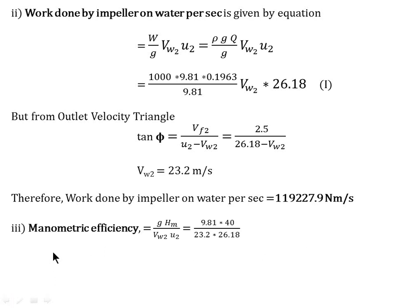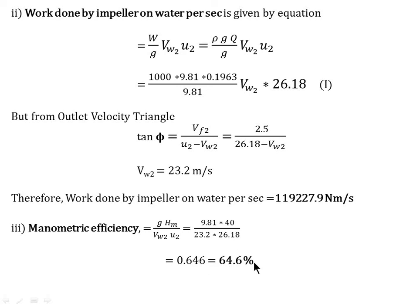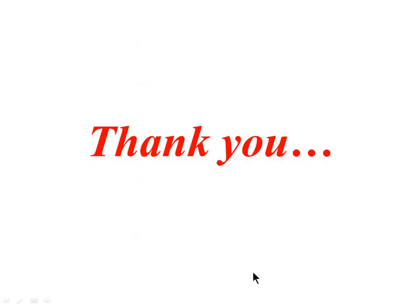The manometric efficiency is given by the formula: eta_m equals g × Hm divided by (Vw2 × U2). Substituting g equals 9.81, Hm equals 40 m, Vw2 equals 23.2 m/s, and U2 equals 26.18 m/s, we get manometric efficiency equals 64.6 percent. Thank you.